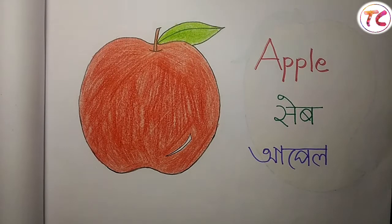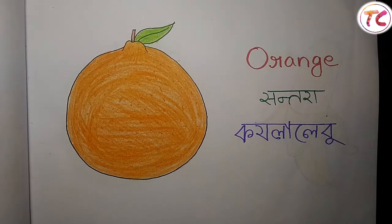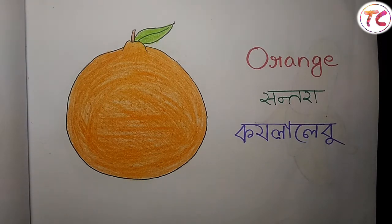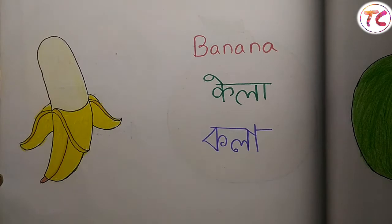Apple — seb — আপেল. Mango — aam — আম. Orange — santra / kamala — কমলালেবু. Banana — kela — কলা.